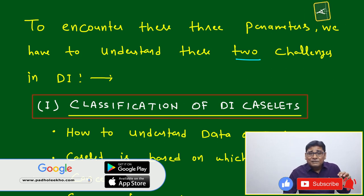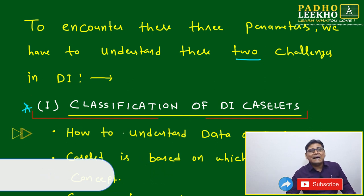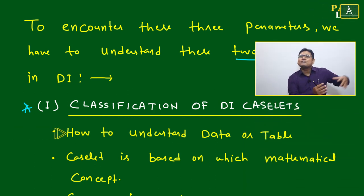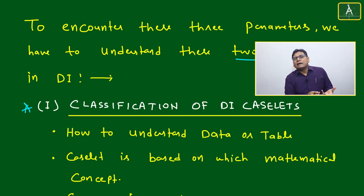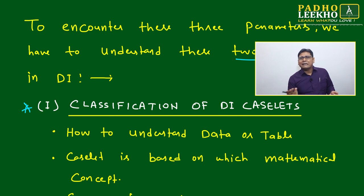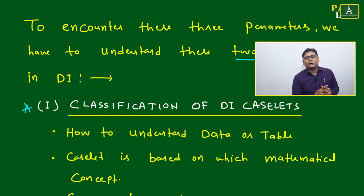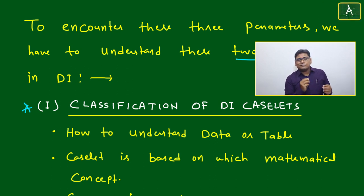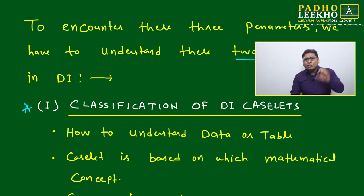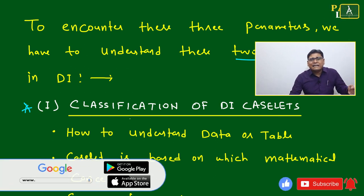Classification of DI case lets is the most important step. We need to understand how many types of case lets can be framed within the scope of the CAT syllabus, without going beyond that scope. Classification should be based on two things: the representation of data and the mathematical concept involved. Based on these two factors, we classify DI case lets, and this is the first challenge to master.